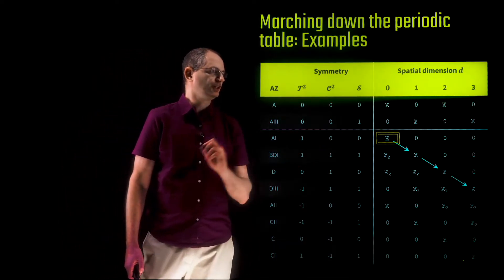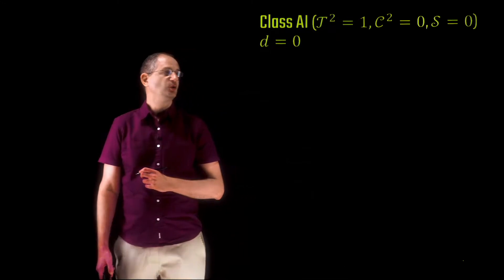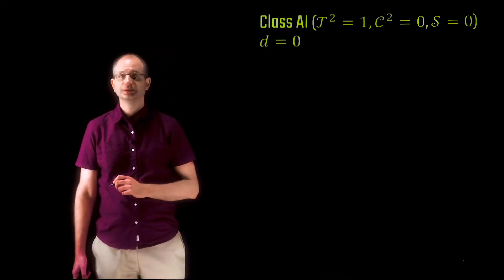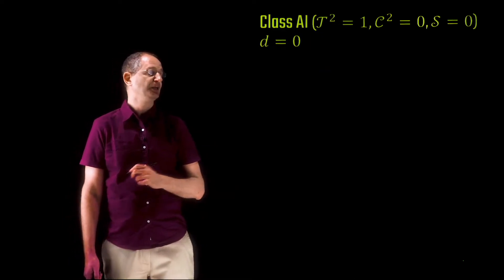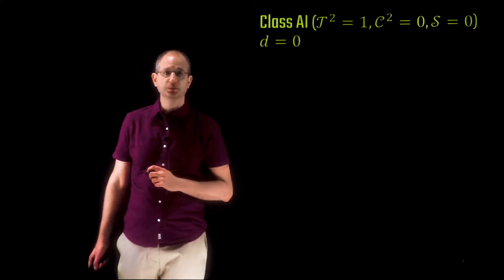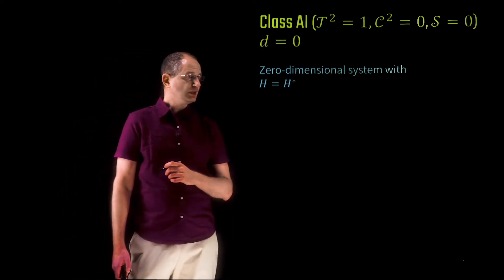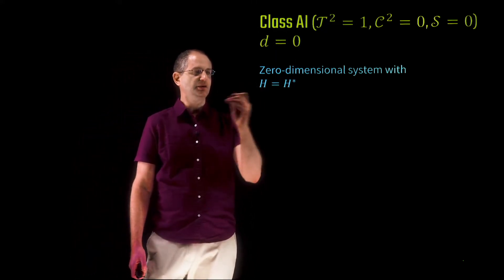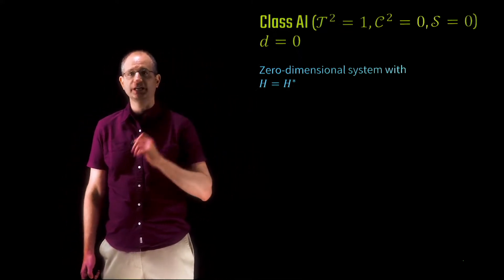Let's start right over here. We're in zero spatial dimensions, class AI. Class AI is a class that has time reversal symmetry that squares to plus one, no particle-hole symmetry, and therefore also no chiral or sublattice symmetry. We're in zero spatial dimensions, so we're dealing with basically a quantum dot or a finite system of electrons with quantized levels. Let's consider the Hamiltonian of such a system — an N by N dimensional matrix, supposing our system has N states or N orbitals.